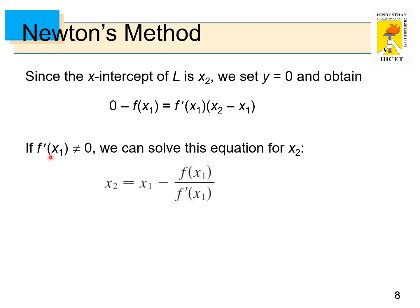If f'(x1) is not equal to 0, we can solve this equation for x2. That is, x2 = x1 - f(x1)/f'(x1). We use x2 as a second approximation to r.